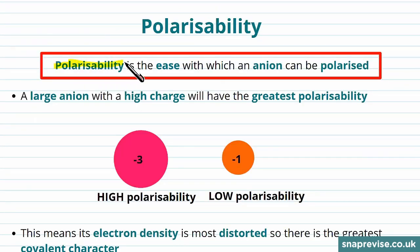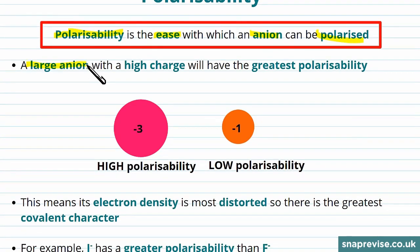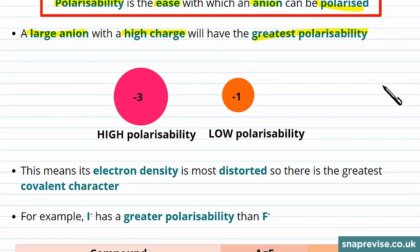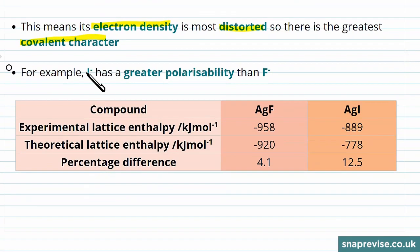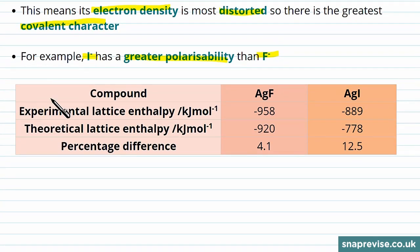Polarisability, on the other hand, is the anion's equivalent to the polarising power of the cation. It's the ease with which the anion can be polarised. A large anion is easier to polarise, and the same is the case if it has a high charge. These have the greatest polarisability because the electrons are furthest away from the central nucleus positive charge. With atoms of high polarisability, we can see that the electron density is most easily distorted by positive cations, giving more covalent character in bonds. For example, iodide ions have a greater polarisability than fluoride ions, and we can see this because there will be a greater discrepancy between the theoretical and experimental lattice enthalpy calculations.